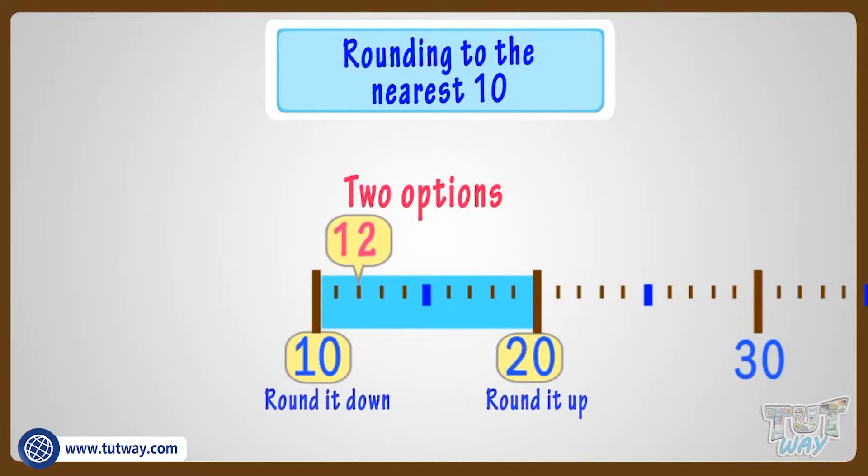Think. Which option do you think is more apt? Here is a rule to help you. You always have a 5 mark midway between the two 10s.